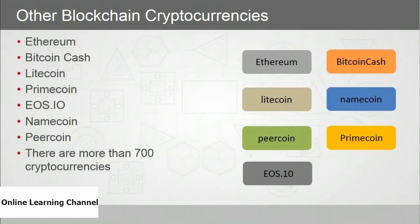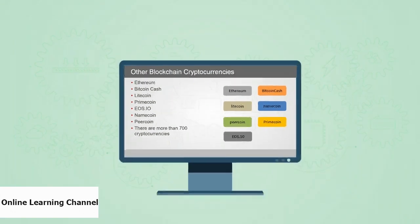While we talk a lot about Bitcoin because it was the first to use blockchain technology, there are plenty of other cryptocurrencies — Ethereum, Bitcoin Cash, Litecoin, Primecoin, EOS.io, Namecoin, and Peercoin, among many more. At last count, there were more than 700 cryptocurrencies using blockchain.